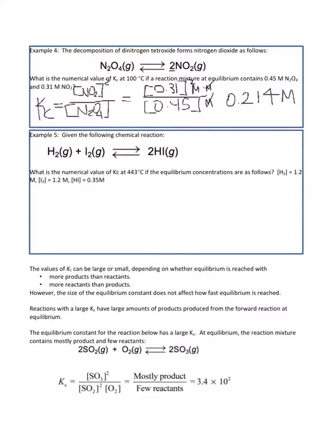Let's try another one. We have a new reaction: hydrogen gas plus iodine gas gives 2 HI, hydrogen iodide. What is the numerical value of Kc at 443 degrees Celsius if the equilibrium concentrations are: H2 is 1.2 molar, I2 is 1.2 molar, and HI is 0.35 molar. Kc is equal to a fraction with the products on top — HI gas raised to the power of its coefficient of 2, so that's squared.